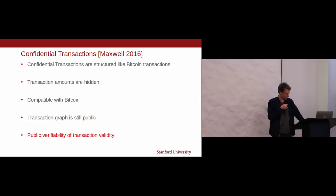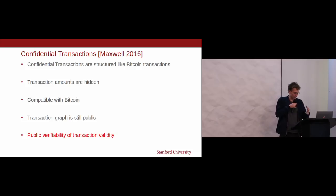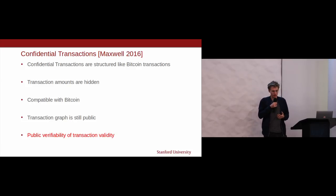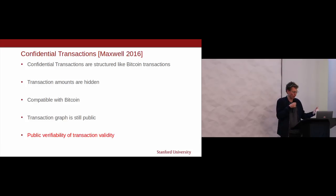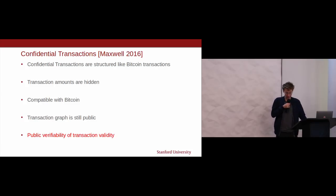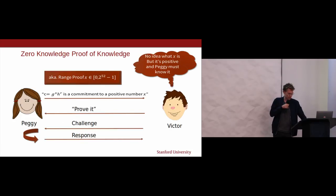How do we check not only that the sum of inputs equals outputs, but also that the outputs are positive? This turns out to be the much harder cryptographic check. Greg proposed confidential transactions, and the core idea is that we hide the transaction amount but don't hide the transaction graph — I can still see what address is paying what address. For public verifiability of transaction validity, cryptography comes to the rescue with something called a zero-knowledge proof of knowledge.